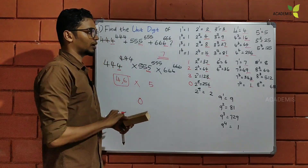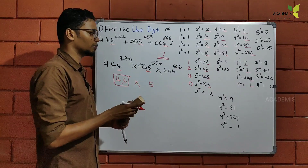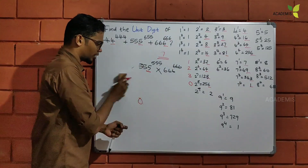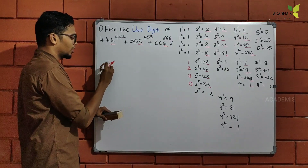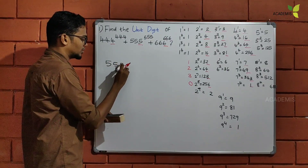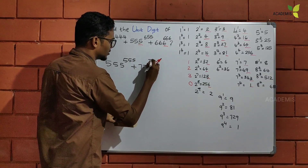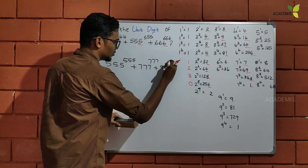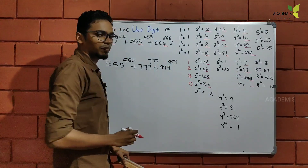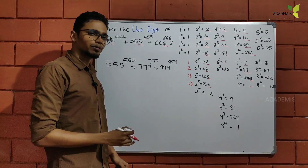We have a method that is very easy to use. We will try to simply work it out. We will try to use the comment section. The practice question is: 5055 raised to 5055, plus 7077 raised to 707, plus 509 raised to 90. You can put your answer in the comment section. Thank you for watching. Have a nice day!